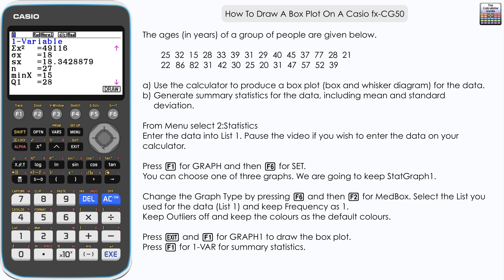Scroll down, we have the standard deviation here. Sigma x is 18 and the sample standard deviation below that. What else have we got? Well we've got n, which is the number of values, 27. The minimum value is 15. Q1, quarter 1 or the lower quartile, which is 28.